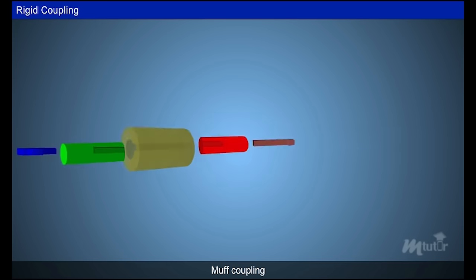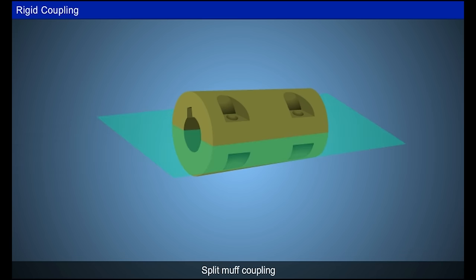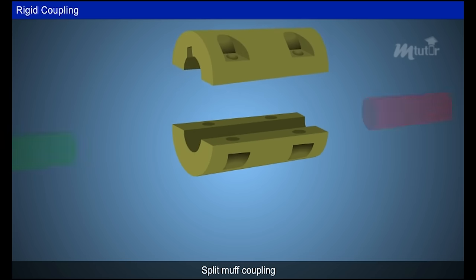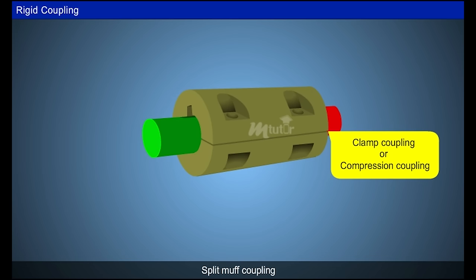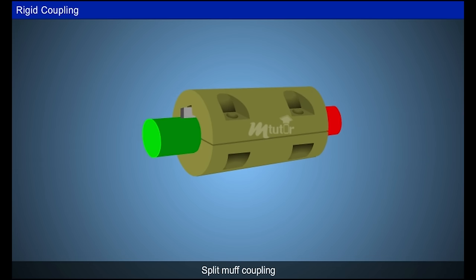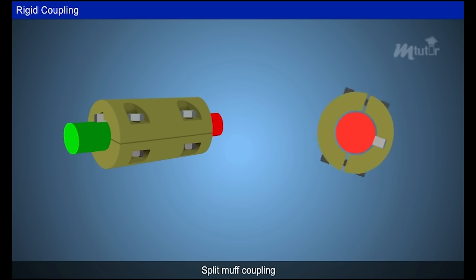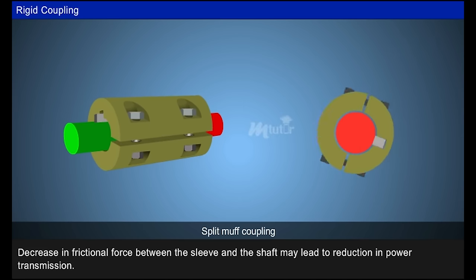To overcome this problem, split muff couplings are used. The split muff has two equal halves split along the plane passing through the axis of the shaft, making it easy to assemble and disassemble by compressing the halves. It is also called clamp coupling or compression coupling. These two sleeves are connected by key, bolts, and nuts, and a frictional force is exerted between the sleeve and the shaft surface, which also helps transmit power. During high power transmission, the gap between the sleeve and the shafts increases, reducing frictional force and power transmission.